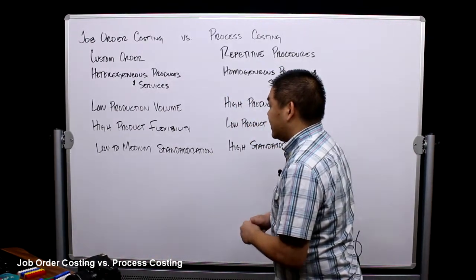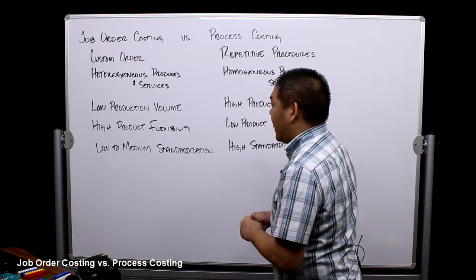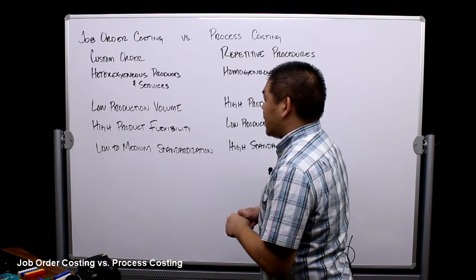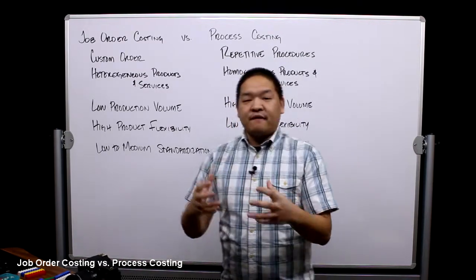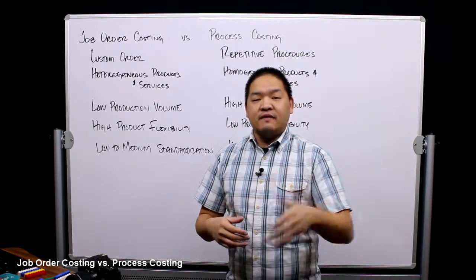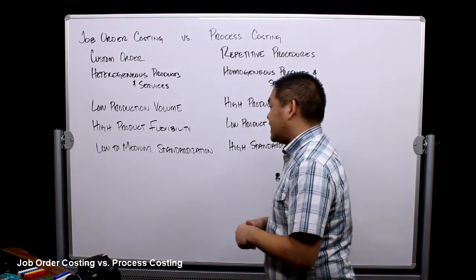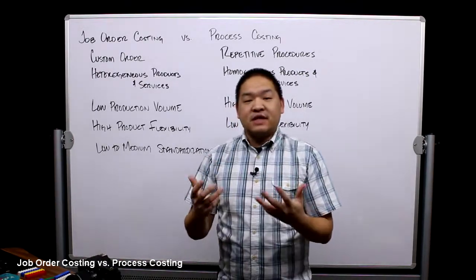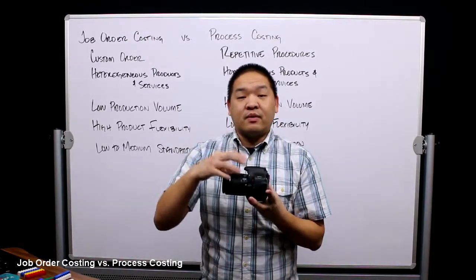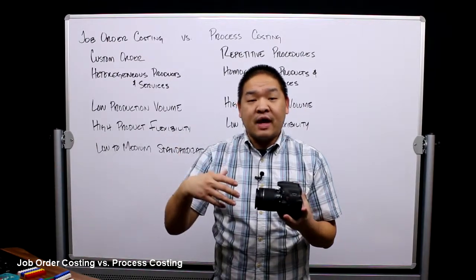Job order costing also involves high product flexibility and low to medium standardization. High product flexibility means putting a lot of customized effort into that product. Low to medium standardization means there's essentially no standardization — what I need to do with this camera from a repair standpoint is different from what I need to do with another camera.